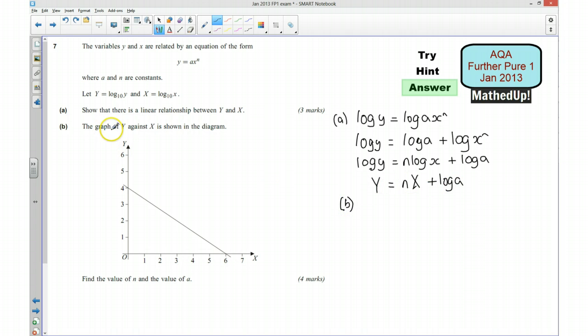The graph of Y against X is shown in this diagram here, and we need to find the value of N and find the value of A. Now, because we've got this in the form Y equals MX plus C, this number here must be the gradient of this line. So I can say N is going to be equal to the gradient of this line, so that's the change in Y divided by the change in X. So that's going to be negative 4 divided by 6, or that's going to be negative 2 thirds.